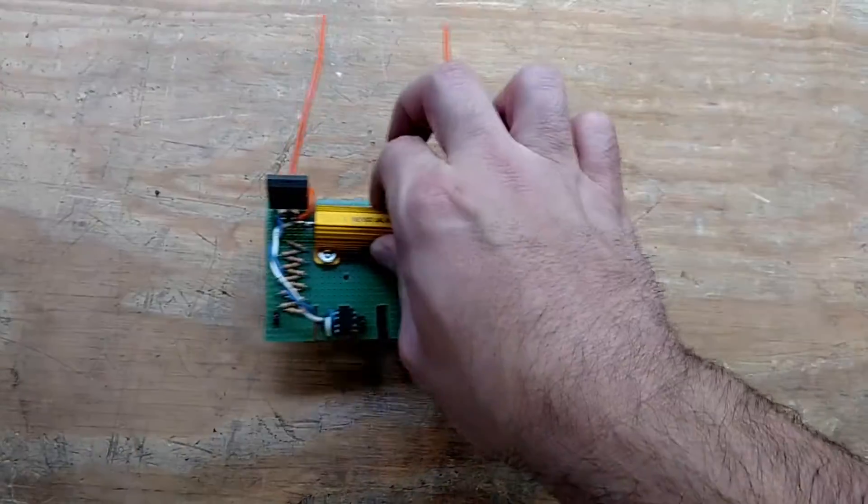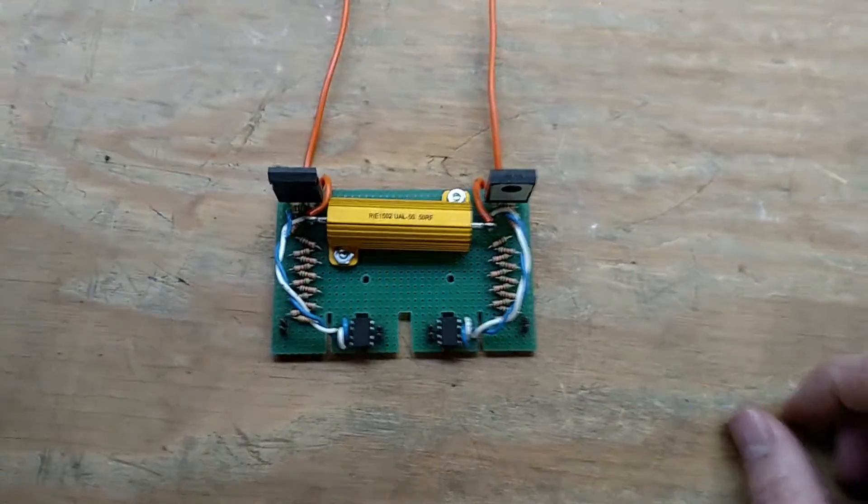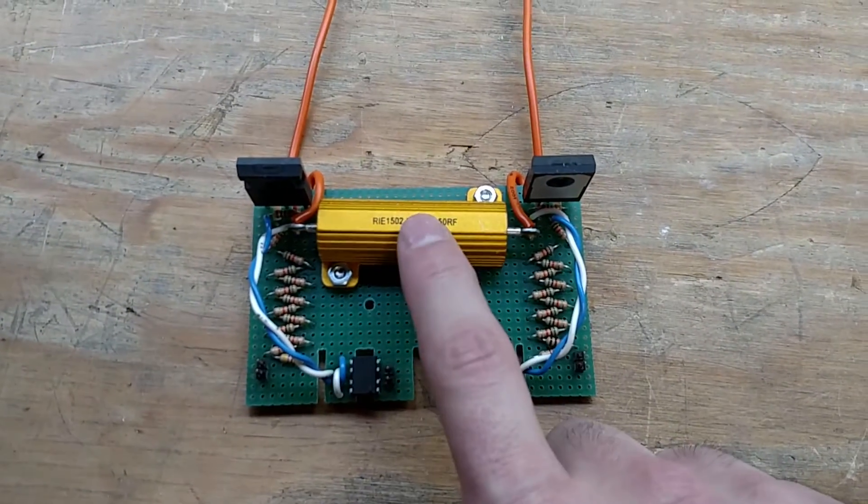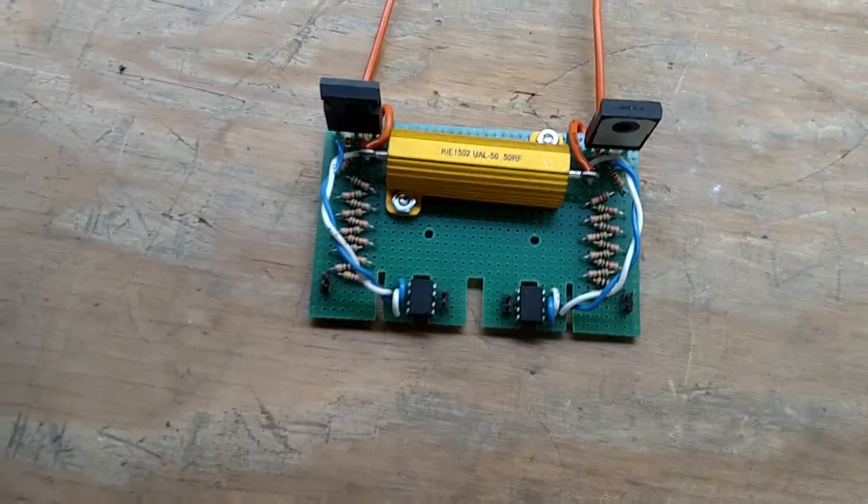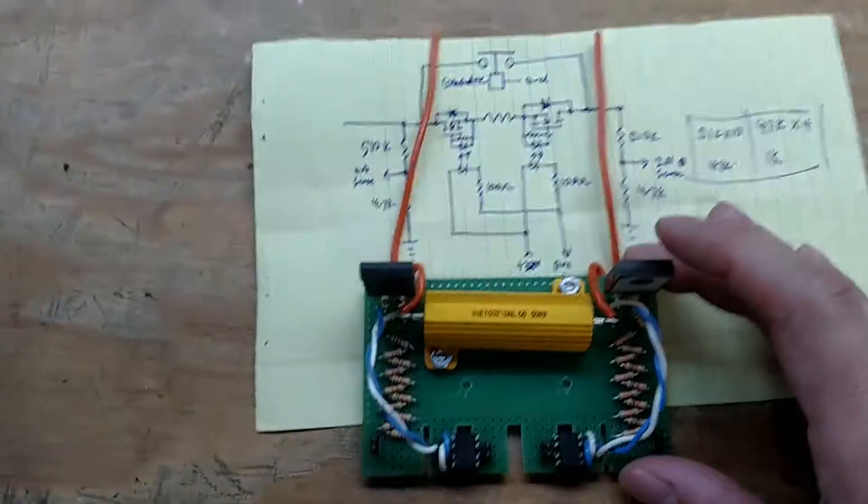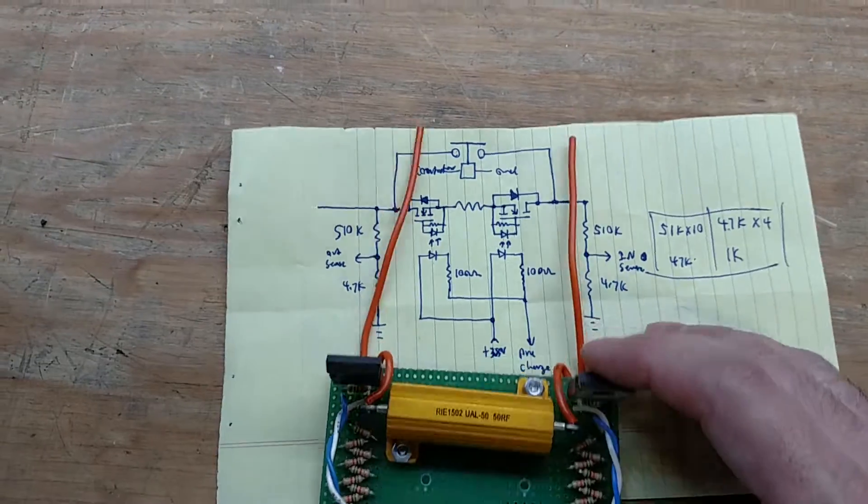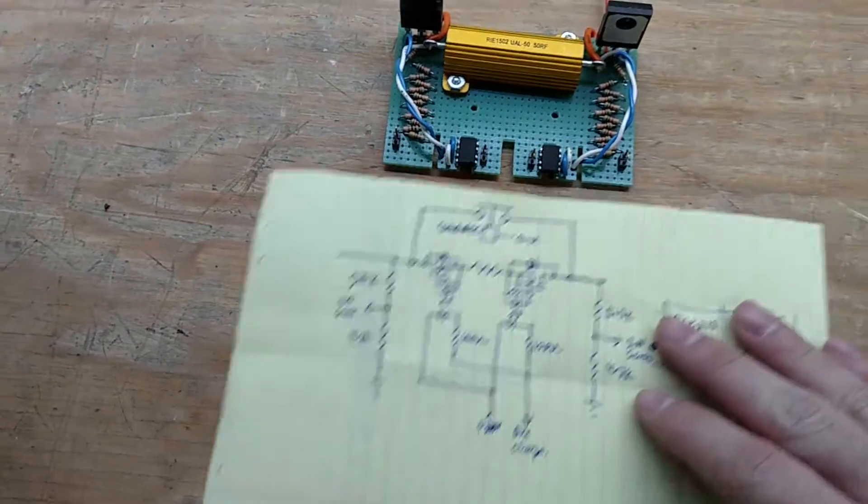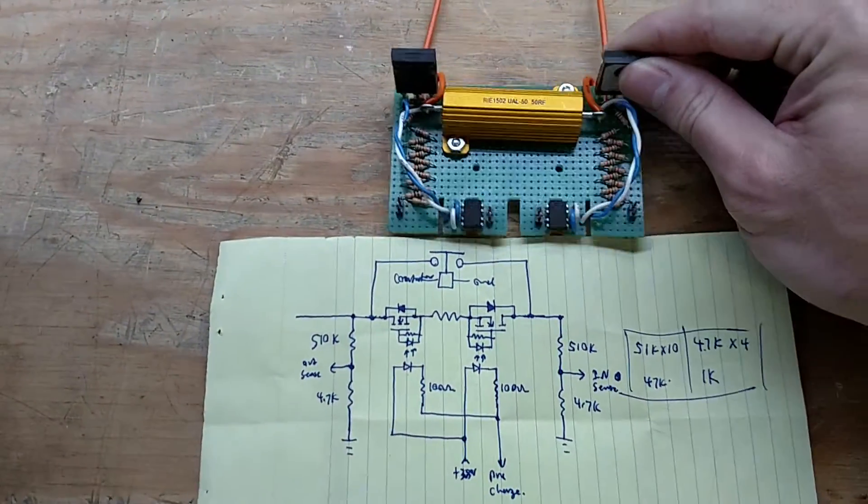And there's the schematic and this is the finished product. So we've got a, this is a 50 ohm resistor. We'll leave this up and go over all the parts here.